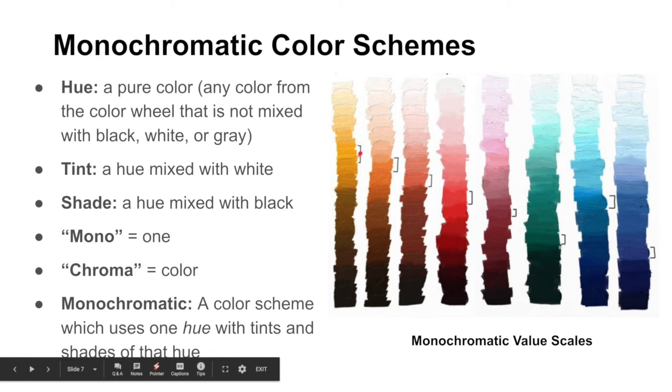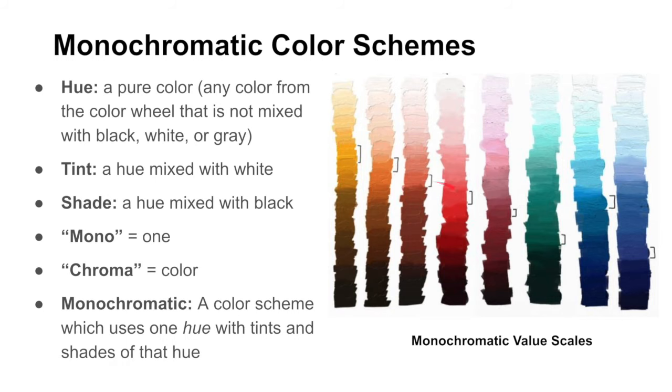So as you can see, there's all these little brackets. The brackets on this picture are all the pure colors. And from each of the pure colors, we slowly add white to go up, and we slowly add black to get darker. So white makes it lighter, black makes it darker.